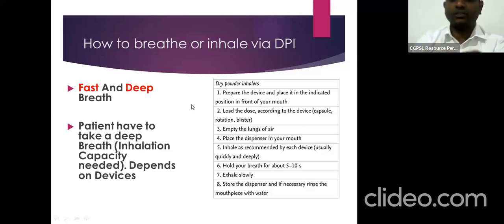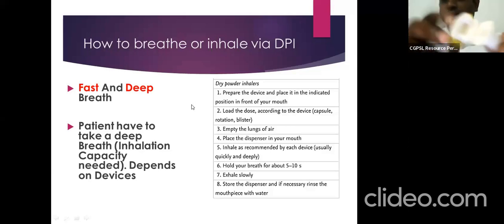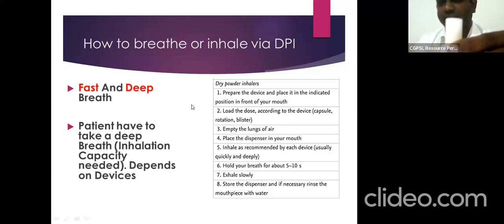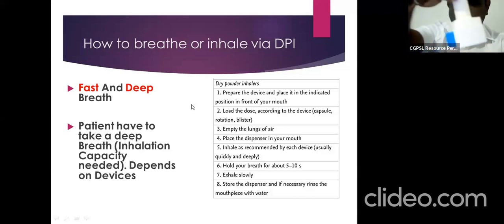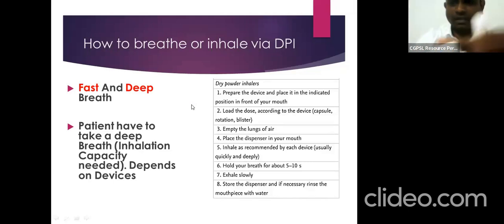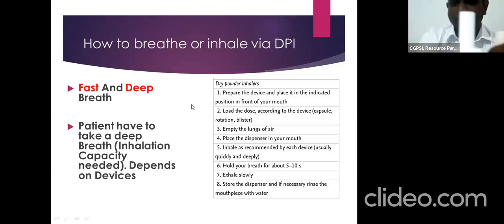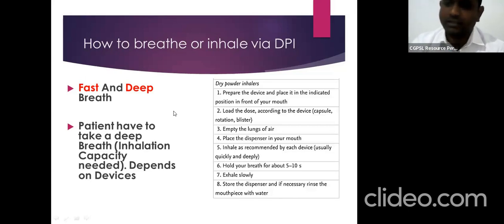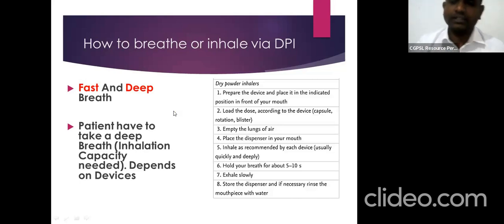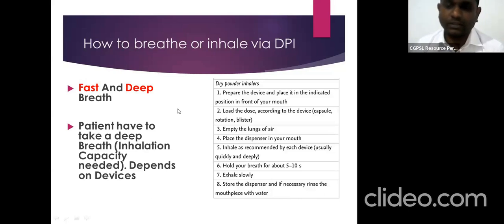This is also a capsule-based device — you just open it, put the capsule inside, and close it. These are the normal devices available in the market. For the Rotahaler-type device, you put the capsule in, close it, pierce it from the side, and just inhale fast and deep. The inhalation capacity and inspiratory flow matter most when giving a dry powder device. Same as with MDIs, you have to gargle your throat and spit it out after use.